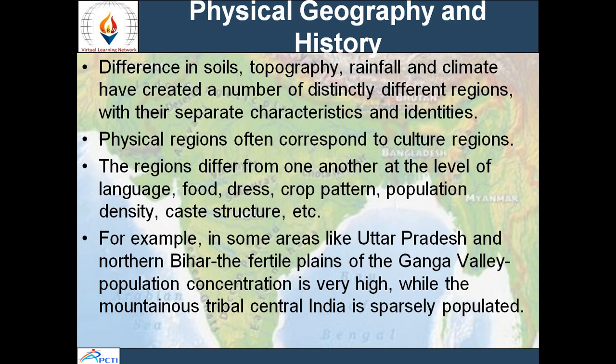Physical geography and history: there is difference in soil, difference in topography, rainfall, amount of precipitation, and climate. These have created a number of different regions with very characteristic features by which we can identify a specific place.